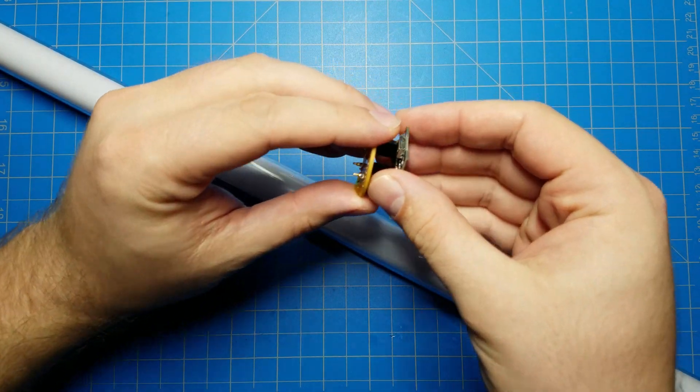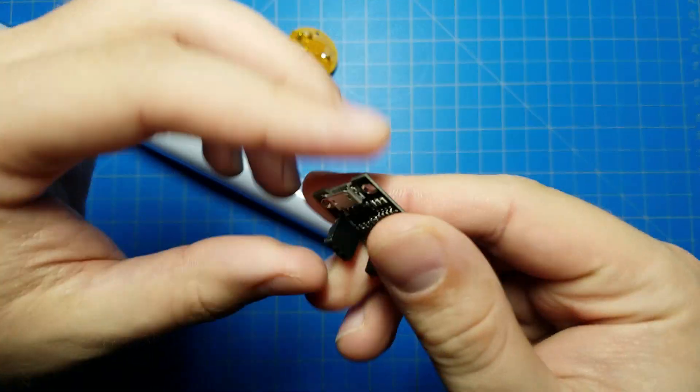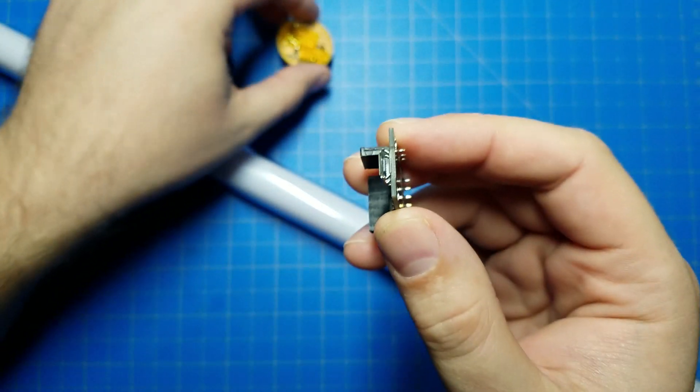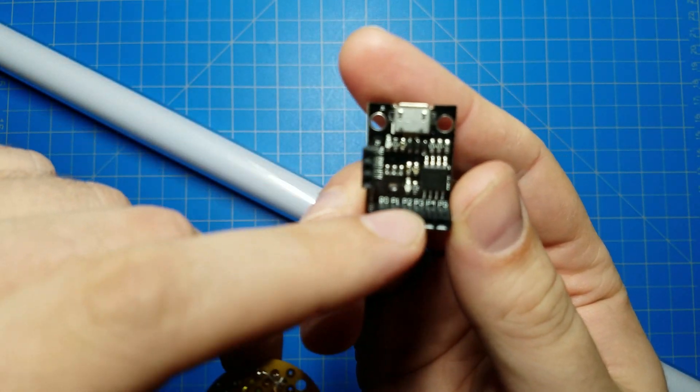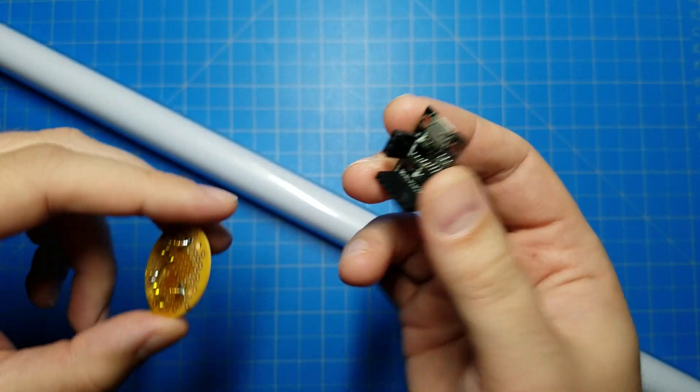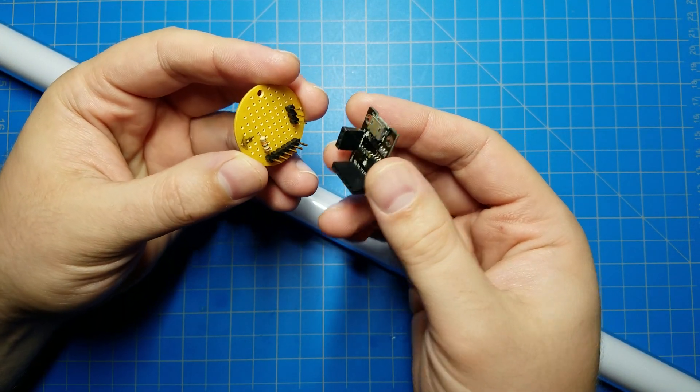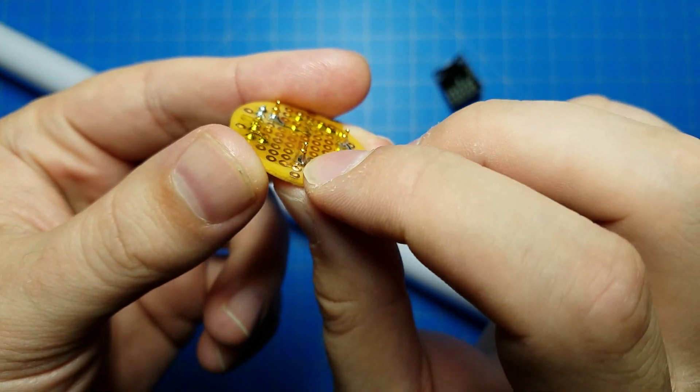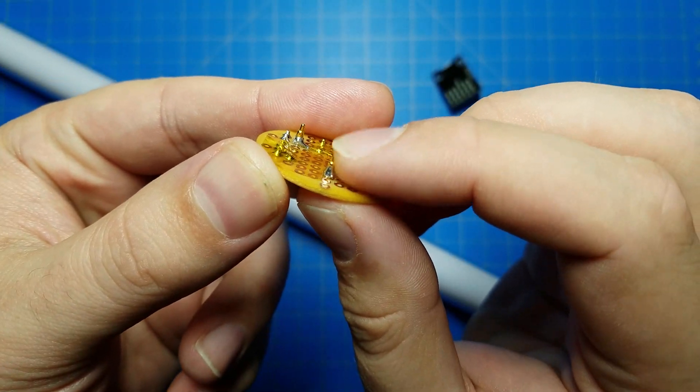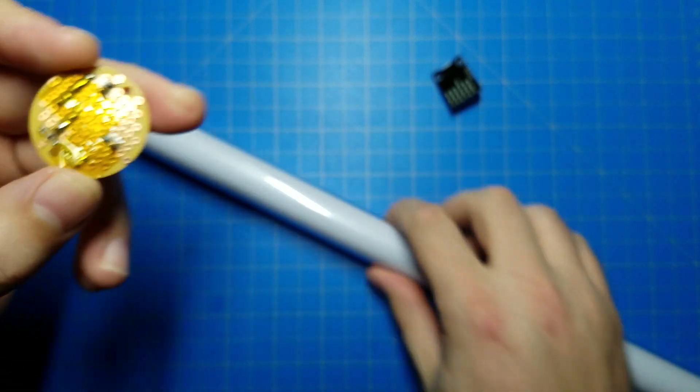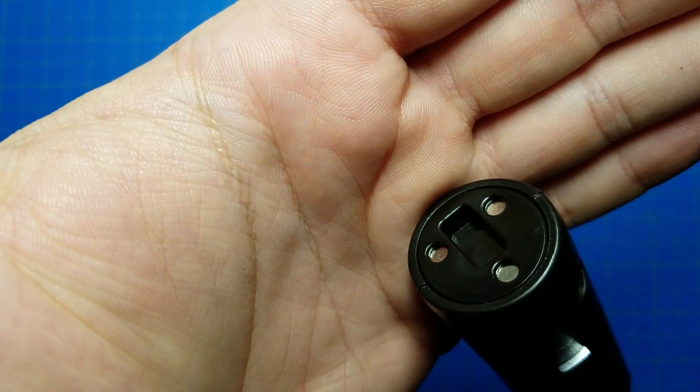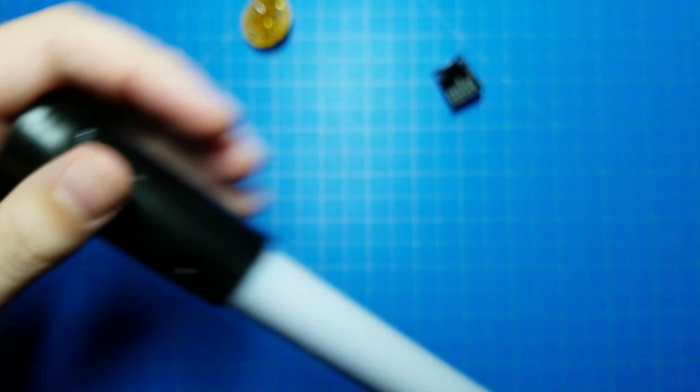Well, what you can do is make one of these. This is a DigiSpark Pro. It's a little Arduino microcontroller, an ATtiny microcontroller that you can program. And this is a little PCB that I put together real quick. I have some Pogo pins, some spring mounted pins here on it that just happened to line up perfectly with the contact pads on the base of the lightsaber blade.